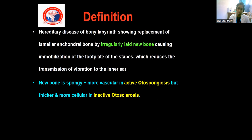The formed bone is very spongy and it has two stages: active and inactive. In the active stage, there is more vascularity and connective tissue, and hence there is no role for surgical management — medical management is preferred. Later, this active stage becomes a mature stage where there is more cellularity with more osteocytes and osteoblasts, which leads to an inactive stage in which condition we can do surgery.